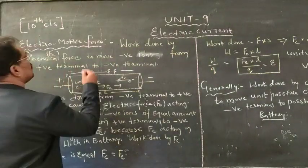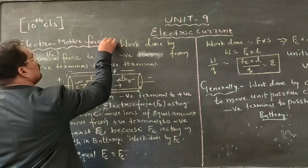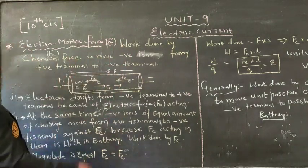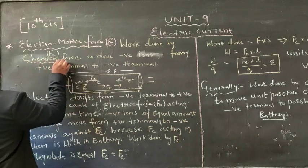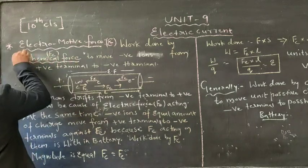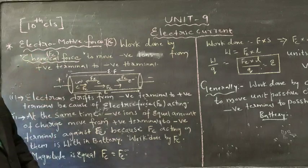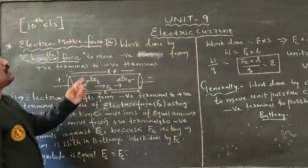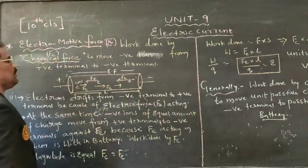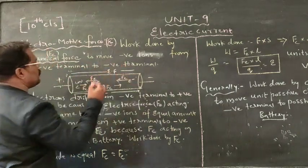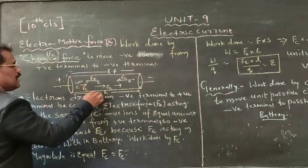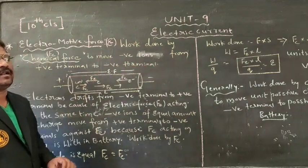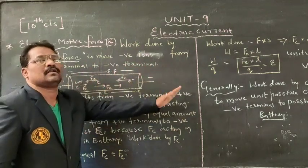Electromotive force is denoted with capital E, which can be defined as work done by a chemical force. Here, a force is doing work. What is that force? Chemical force — to move negative ions from the positive terminal to the negative terminal. When we connect it to a source, a uniform electric field will be set up throughout the conductor.